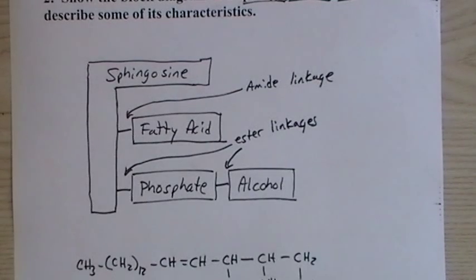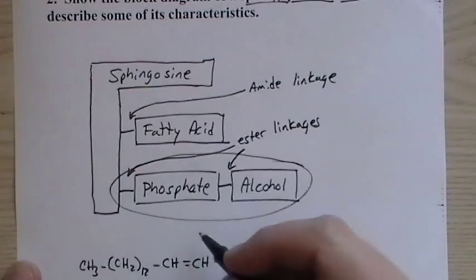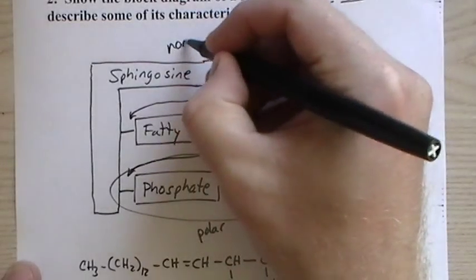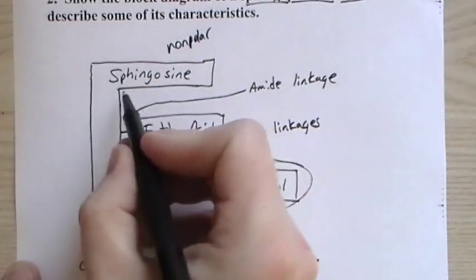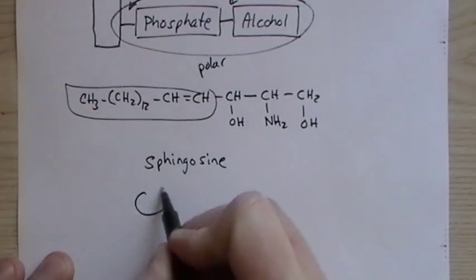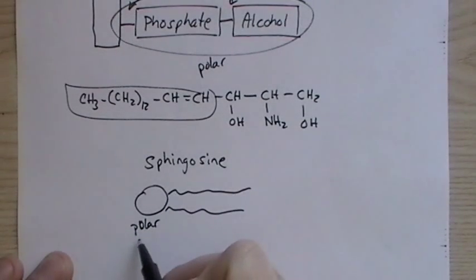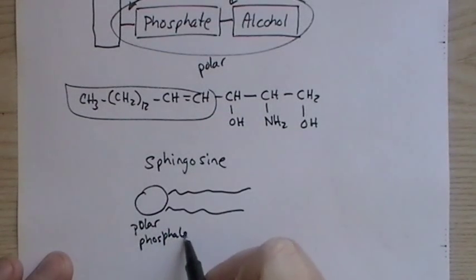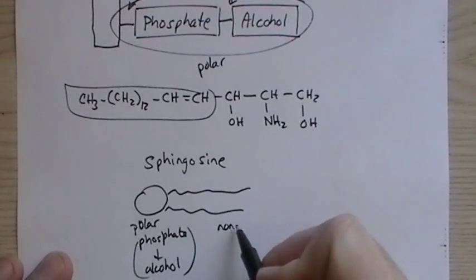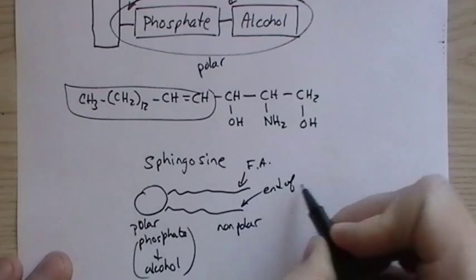That amide is a little bit different, and so there's a different structure here. But what we still have is a polar end, and a nonpolar end, with two. This sphingosine is this long chain here, and then the fatty acid is a long chain. So we still end up with this structure where we have a polar end, which is the phosphate and alcohol. And then we have the nonpolar end, but instead of being two fatty acids, we have the fatty acid, and then we have the end of the sphingosine.